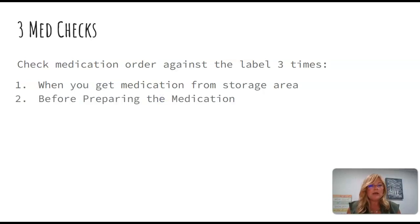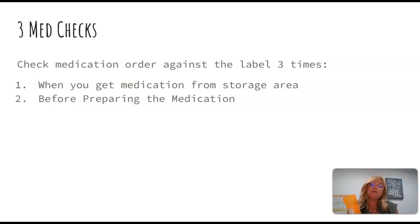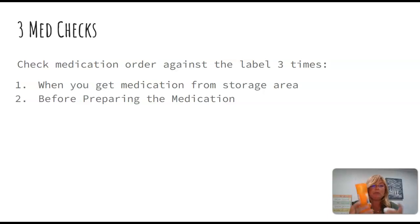The second med check occurs before you prepare the medication. You're placing items on the counter — your tray cover, a little cup for administering — and getting everything ready. Before you open and pour, say you need one capsule because it matches two milligrams, you do your second check. Now you're preparing this medication and putting it into the medication cup.